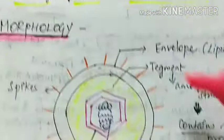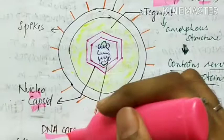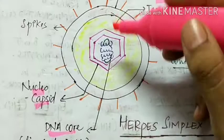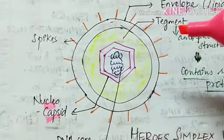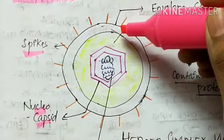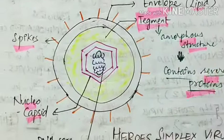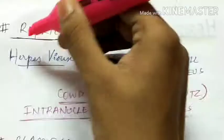Regarding morphology, the herpes simplex virus consists of a lipid envelope and a nucleocapsid containing a linear double-stranded DNA core. The envelope contains spike proteins. The amorphous structure present between the envelope and the nucleocapsid is called the tegment, which contains several proteins.